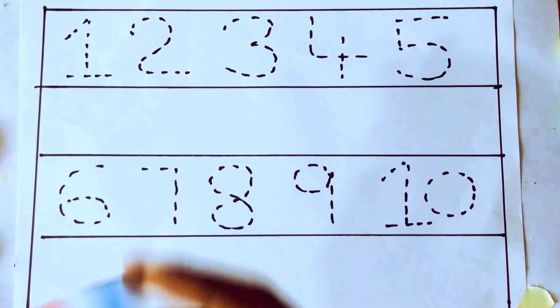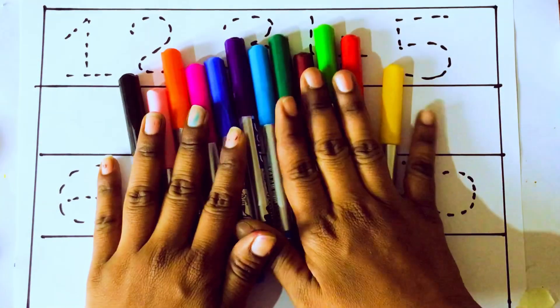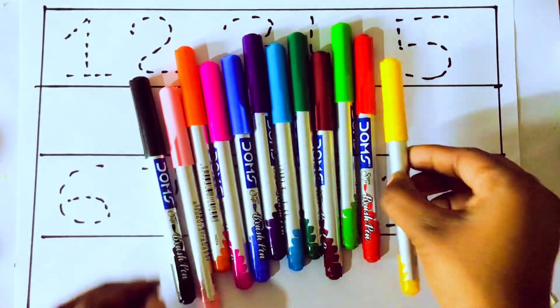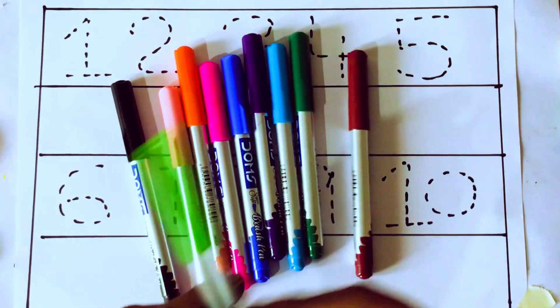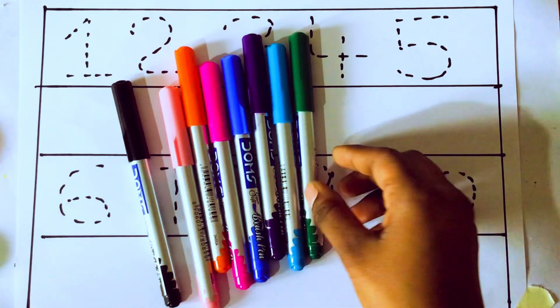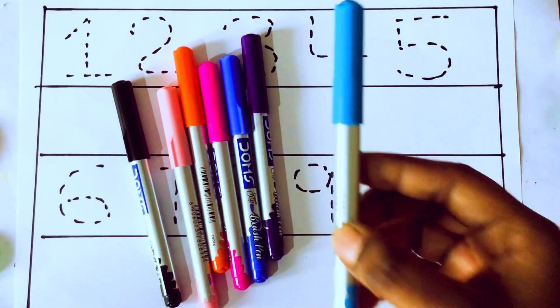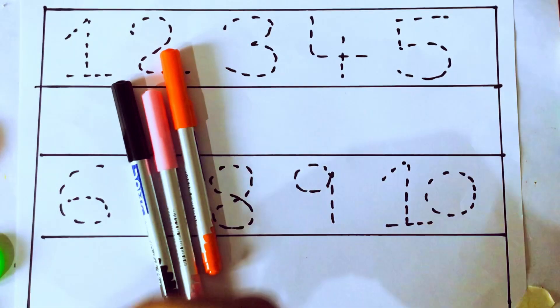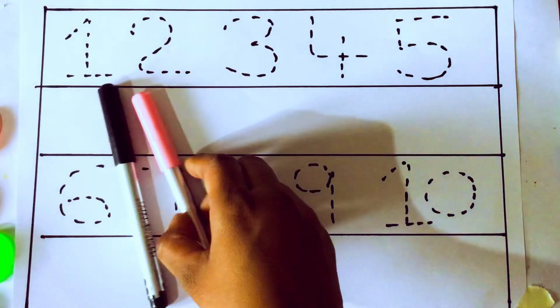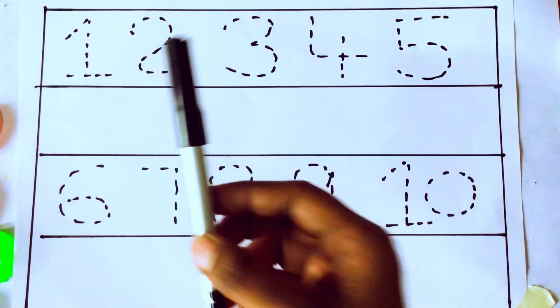Let's learn some colors. These are all the colored pencils. Let's learn the names: yellow color, red color, green color, brown color, sky blue color, violet color, blue color, pink color, orange color, and black color.